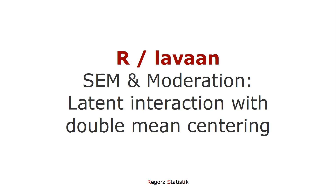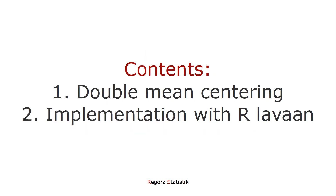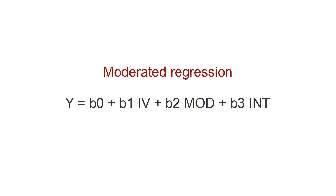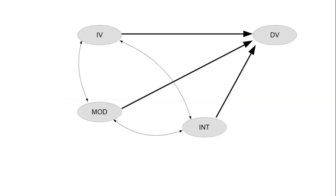The analysis is conducted with Lavaan. First, I explain the principles of double mean centering, and then I will show you how to implement it with Lavaan. If you want to test a moderation with regression analysis, then you include the independent variable, the moderator, and the interaction. In an SEM context, it's basically the same, just that now we use latent constructs and not measured variables.